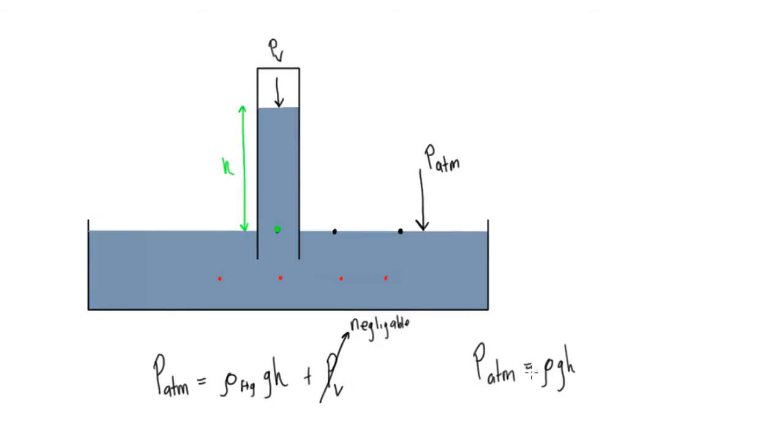So we have P atmosphere equals ρgh plus Pv, but that's negligible. Now we want to do an example problem. What if we're given how high the barometer is reading?